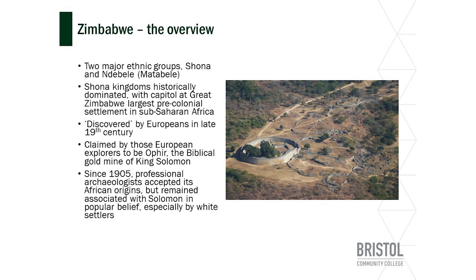Great Zimbabwe was abandoned at the end of the 15th century, mainly due to environmental issues. The ruins were then 'discovered' by Europeans in the 19th century. Much like the Hamitic theory in Rwanda, it was believed that such a giant, very advanced city — the masonry is entirely done without mortar, so it's incredibly well-designed — obviously couldn't have been the work of Africans. Therefore it was claimed that ancient Europeans had come to southern Africa and built this city, typically associated with King Solomon and believed to be his city of Ophir.